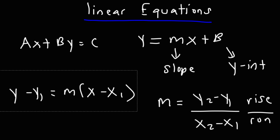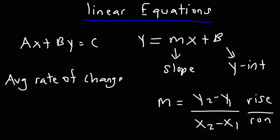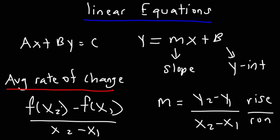The slope formula is very similar to the average rate of change formula. To calculate the average rate of change, it's the change in y — f(x2) minus f(x1) — divided by the change in x. The average rate of change gives you the slope of the secant line. A secant line touches two points on a curve, while a tangent line only touches one point on a curve.